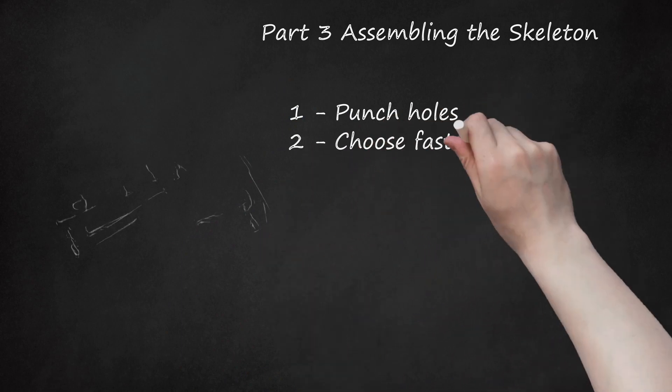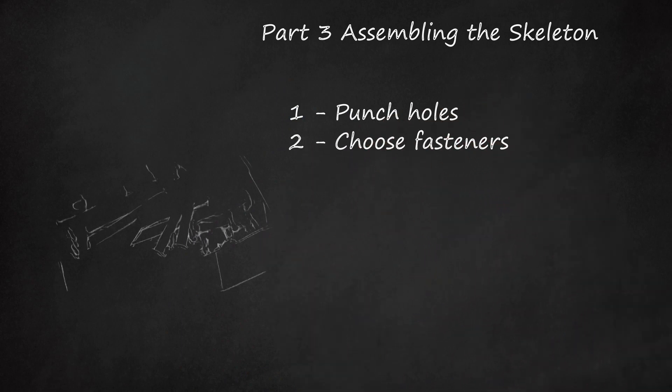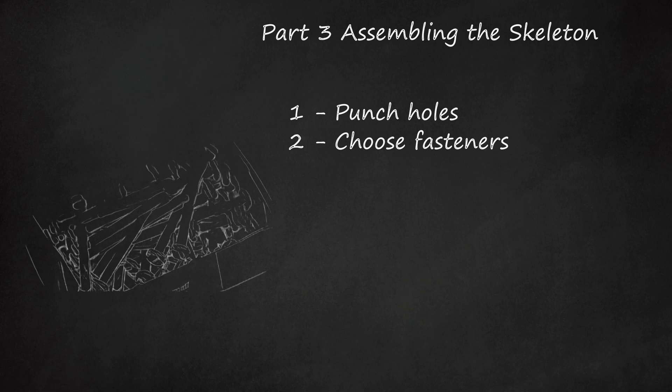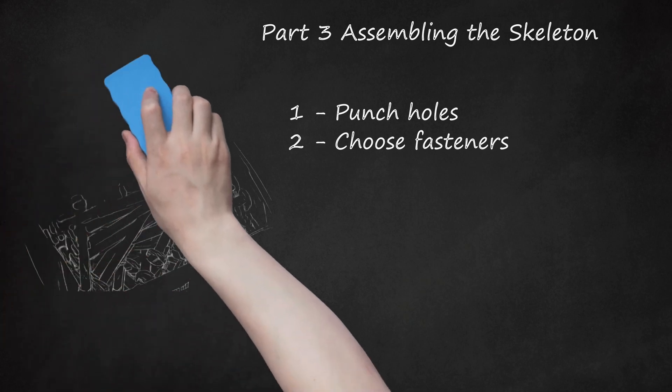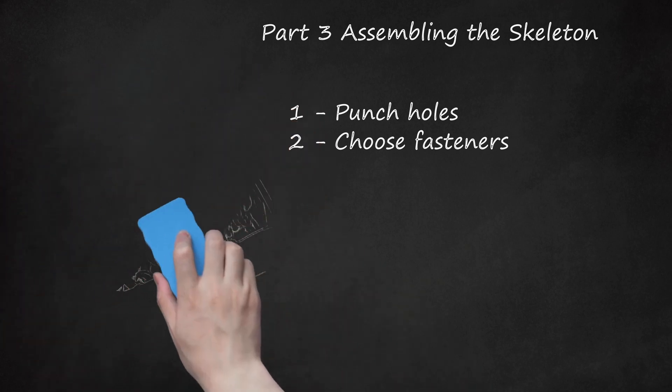Step 2: Choose Fasteners. The skeleton parts can be attached to each other with loops of string or brass fasteners. Brass fasteners can be found at office supply or craft stores. String gives the skeleton a looser, dangly look. Brass fasteners can be fastened tightly to hold bones in particular positions.